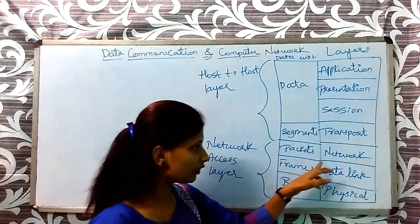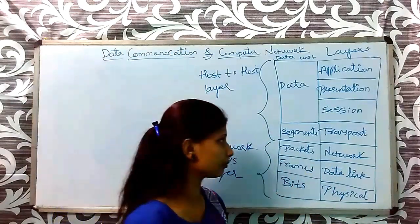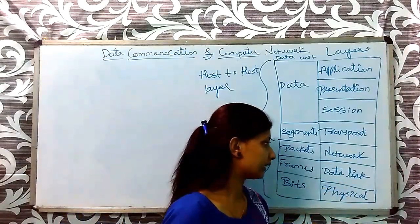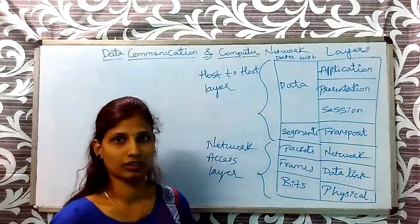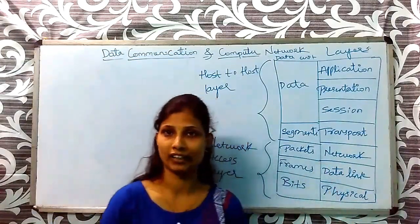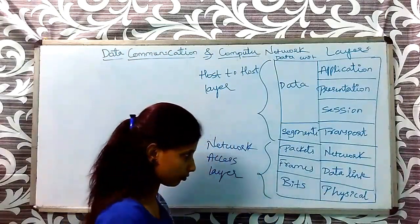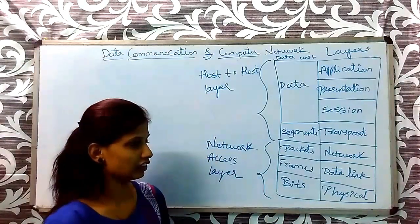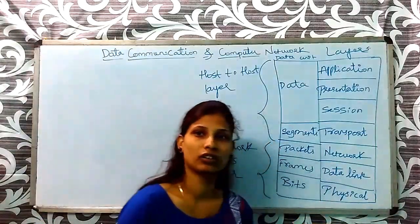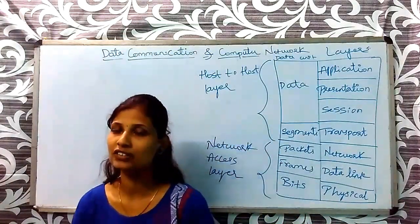In the Network layer, it maintains physical addresses, that is IP addressing. In the Data Link layer, it maintains flow control and error control. And finally, in the Physical layer, the actual connection between two devices is established. There are two types of connections in the Physical layer: one is wired and another one is wireless connection.